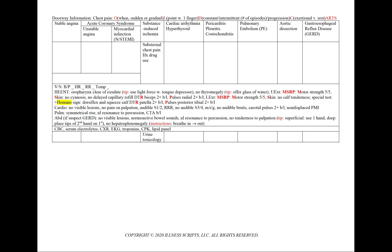In substance-induced ischemia, the supporting points include substernal chest pain with a history of drug use. We include a urine toxicology screen.